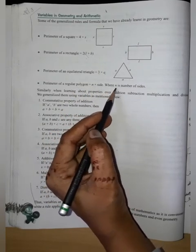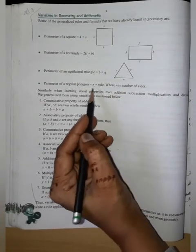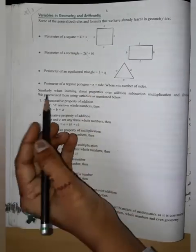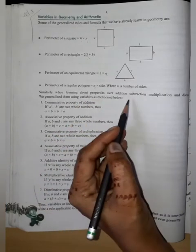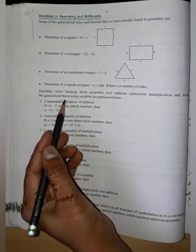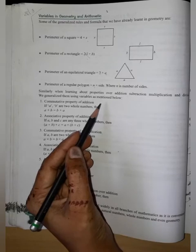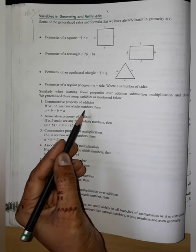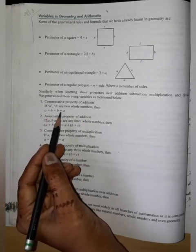This is our addition, subtraction, multiplication and division. We generalize them using variables as mentioned below. Commutative property of addition: A plus B is equal to B plus A.